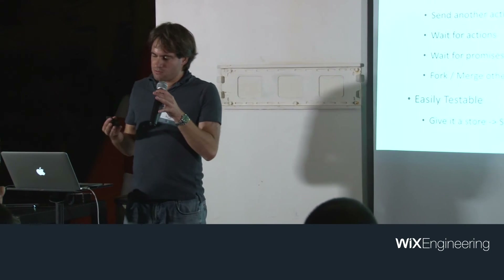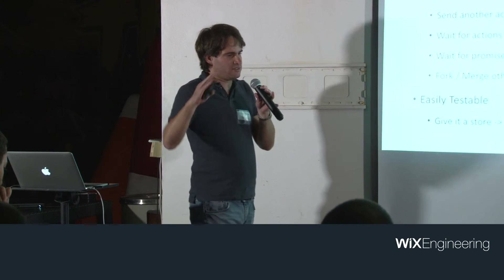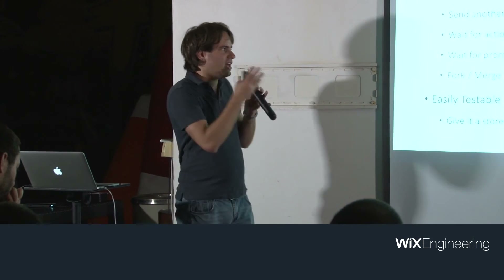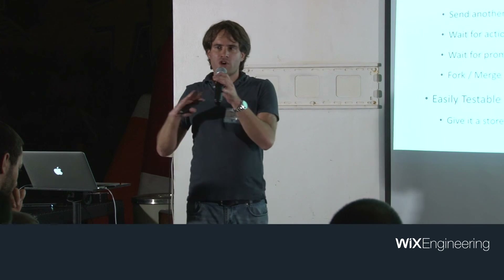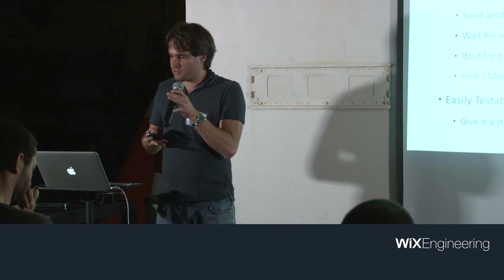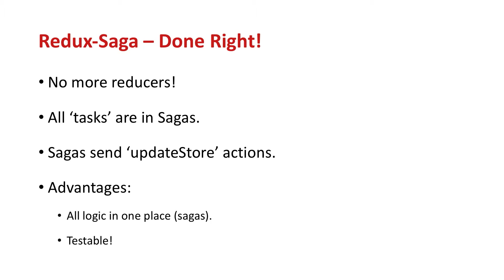Just as it's good to write your views pure of logic, you should write most of your business logic as sagas. Once you write them as sagas, you can use them across all platforms and it'll be a lot easier to debug and write. We took it a step further — we don't have any reducers. Actually that's my vision; we're going this way. The saga updates the state itself. All tasks are in the saga, which simply tells the story to be updated. All logic in one place, testable across all platforms.